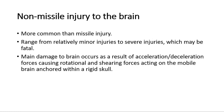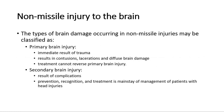Non-missile injury to the brain is more common than missile injury. This ranges from relatively minor injuries to severe injuries, which may be fatal. Main damage to the brain occurs as a result of acceleration or deceleration forces causing rotational and shearing forces acting on the mobile brain anchored within a rigid skull. The types of brain damage in non-missile injuries may be classified as primary or secondary brain injury.